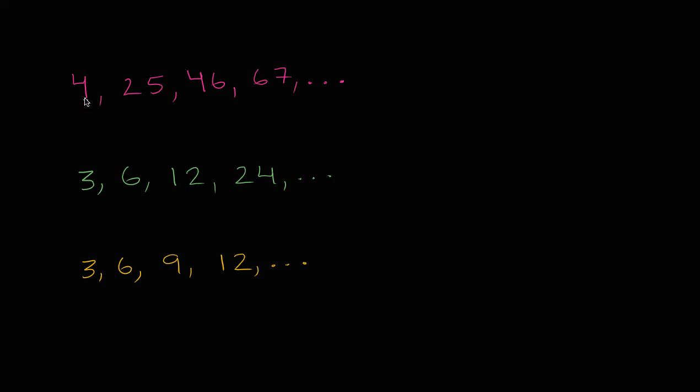So over here in this magenta color, I go from four to 25 to 46 to 67. So what's the pattern here? How did I get from four to 25? And can I get the same way from 25 to 46 and 46 to 67? And could I just keep going on and on?